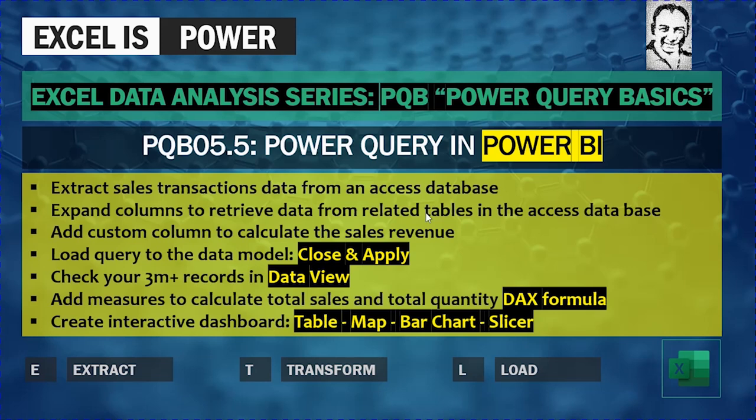We are going to load our query into a data model using Close and Apply instead of Close and Load To. We'll check our data — more than 3 million records — in a data view instead of the Power Pivot editor. We'll add measures using DAX formulas, and instead of a pivot table, we'll report our information in an interactive dashboard using a table, map, bar chart, and a slicer. Timestamps are provided below the video.